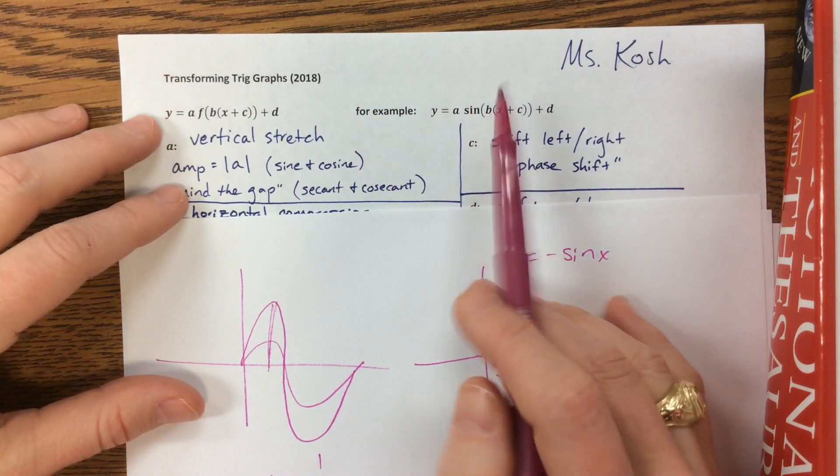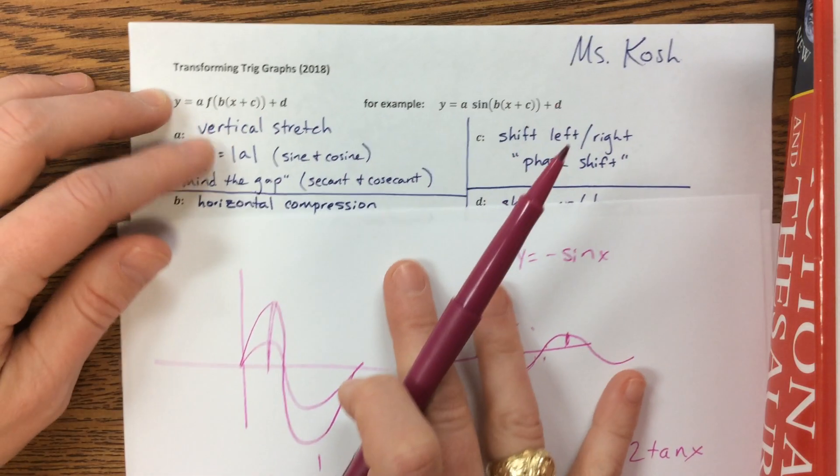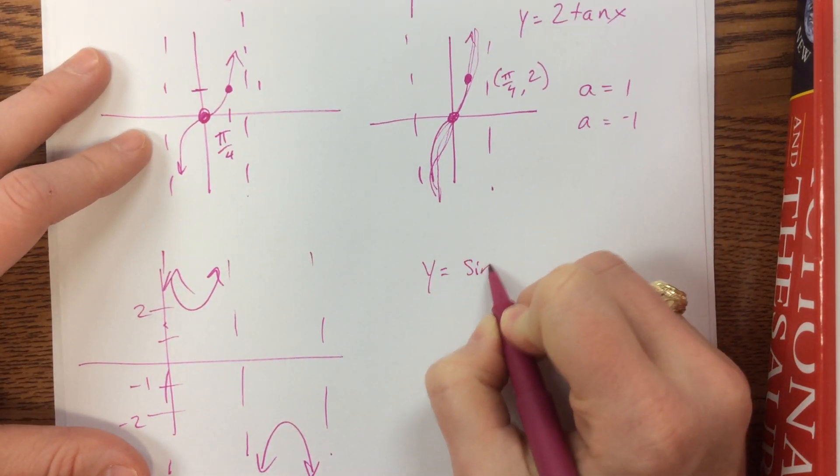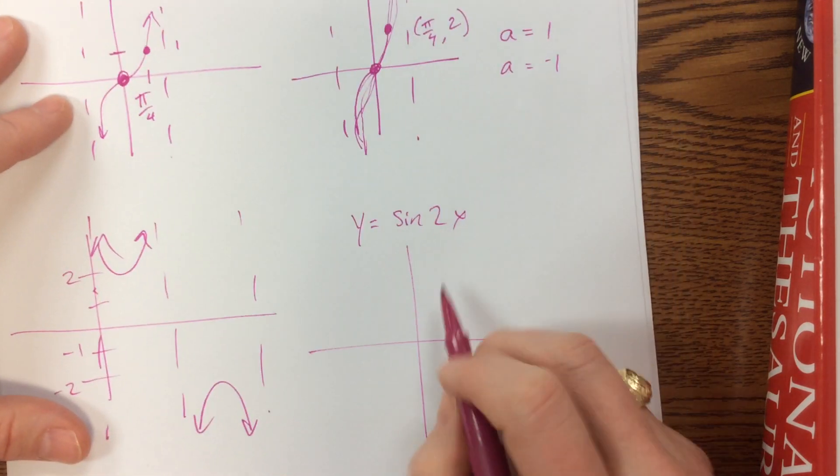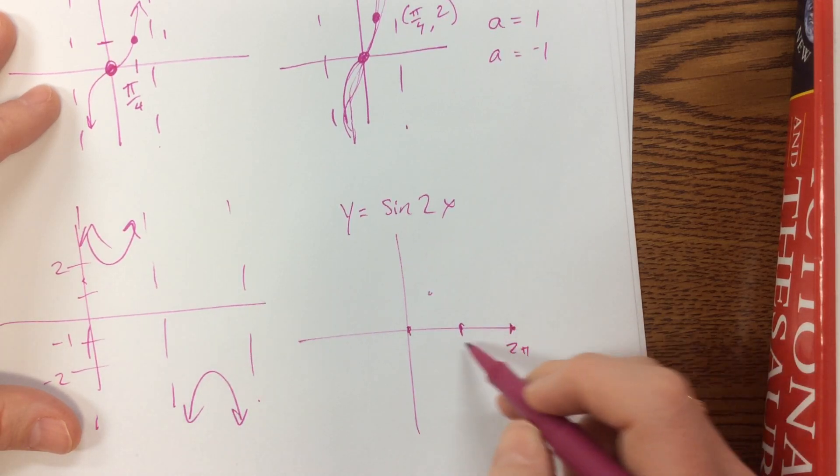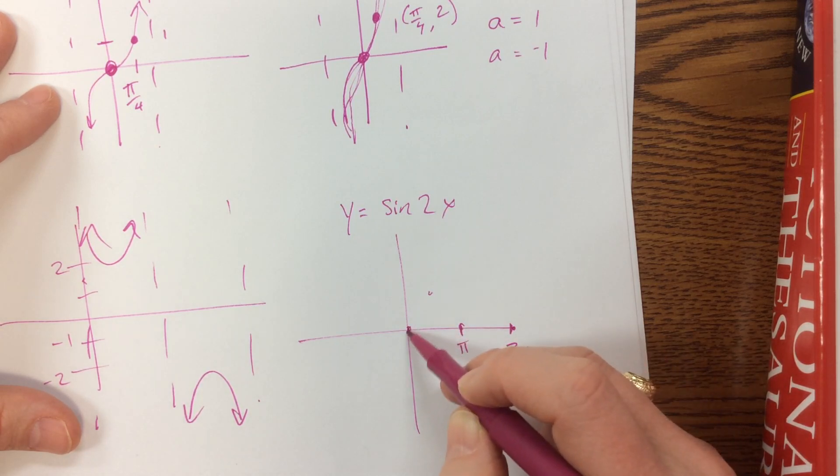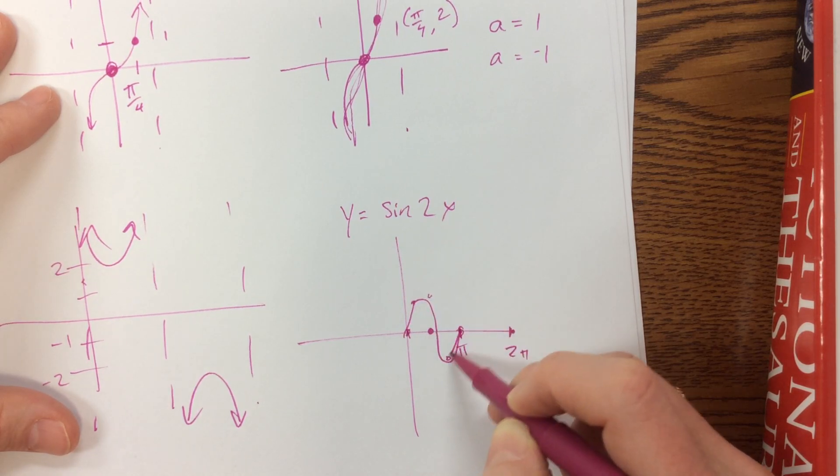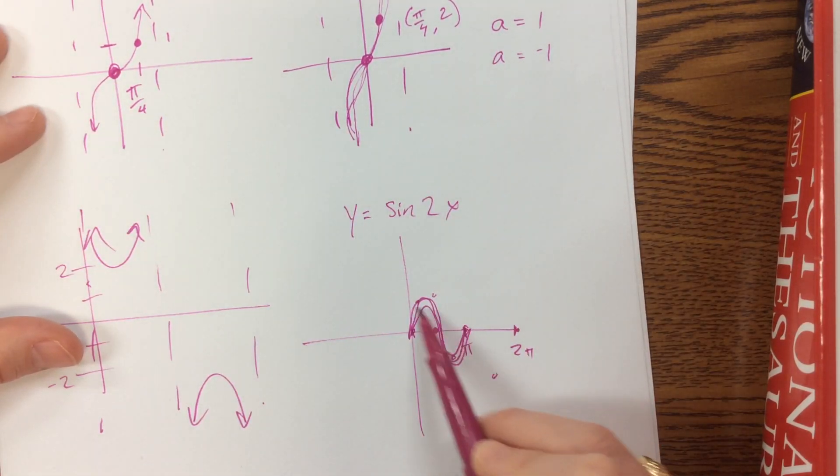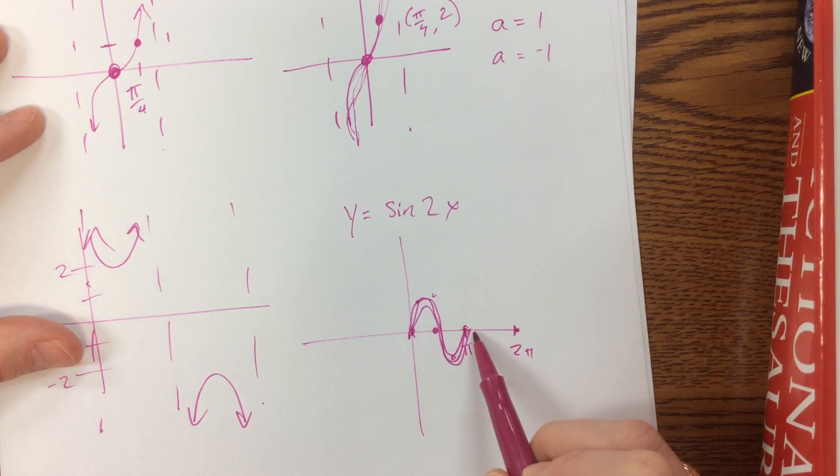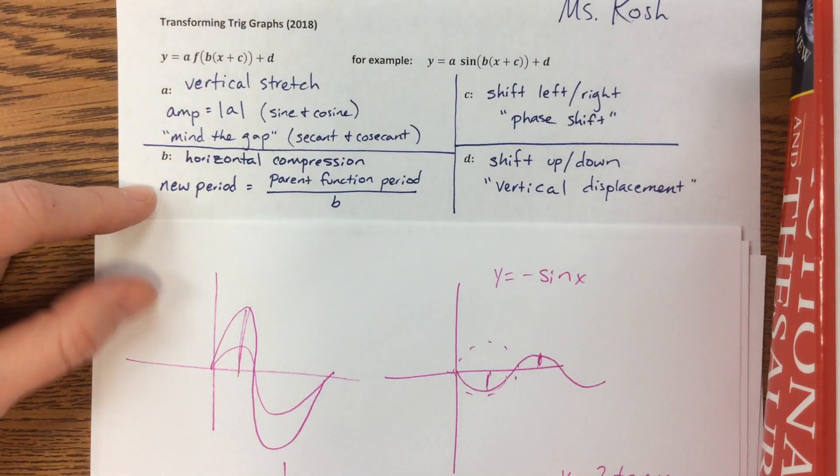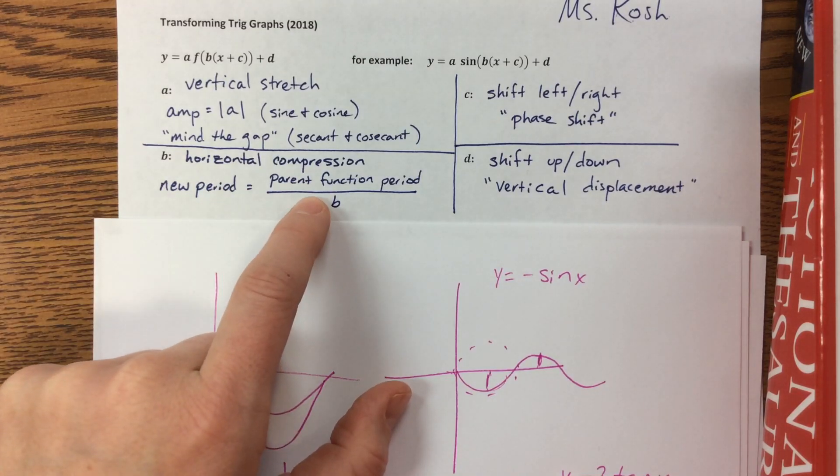The next thing, b, you'll remember, b does a horizontal compression. And so what that does is it changes the period. So if I have something like y equals sine of 2x, it takes my sine graph, and instead of doing everything I need to do by 2π, so normally it would go by 2π, now it's going to do that twice as fast, so it's going to get there by π. So it would do something closer to this. So now this new period, what it's done is it's compressed the whole graph, and instead of doing everything it's going to do by 2π, it now does everything it's going to do twice as fast. So the way that I like to write this in our notes is that it's a horizontal compression.